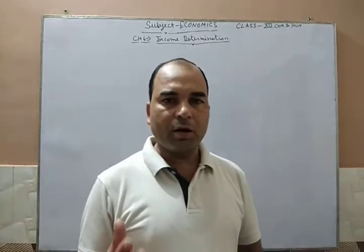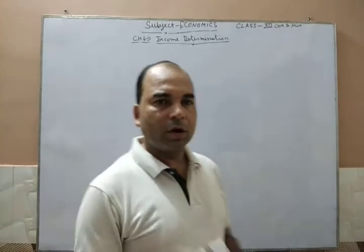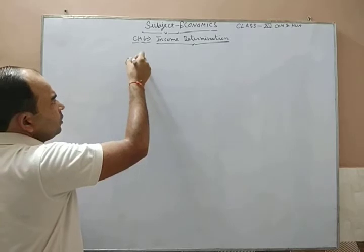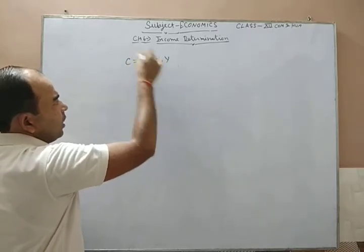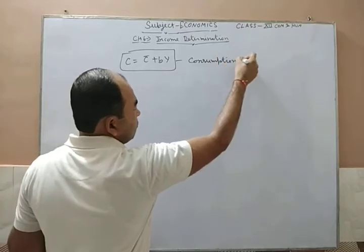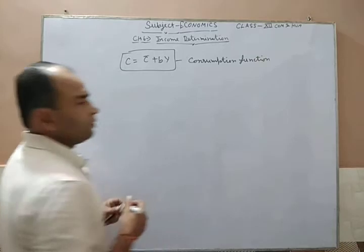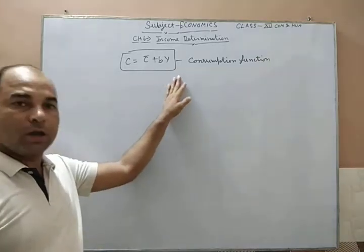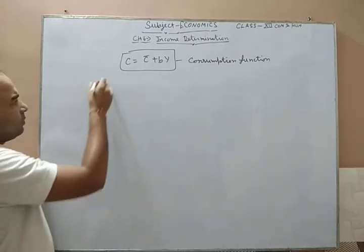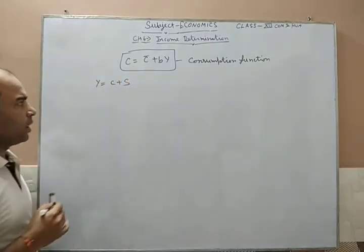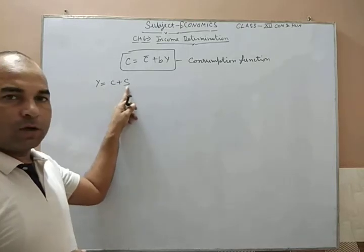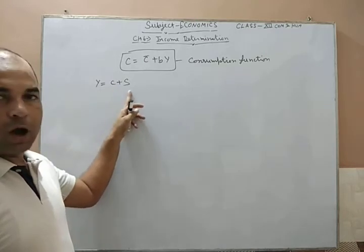As revision, we discussed how the saving function can be derived from the consumption function. The linear consumption function is: C is equal to C-bar plus bY. Using this, we can draw the saving function. You know that Y is equal to C plus S, where Y is national income, C is consumption, and S is saving. Income is either consumed or saved.